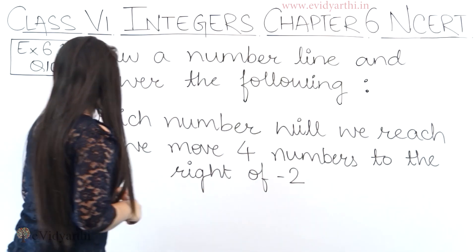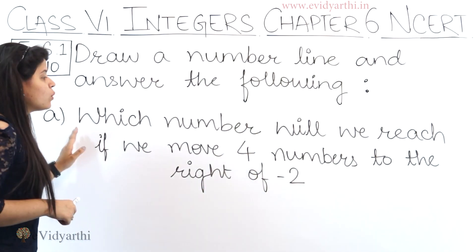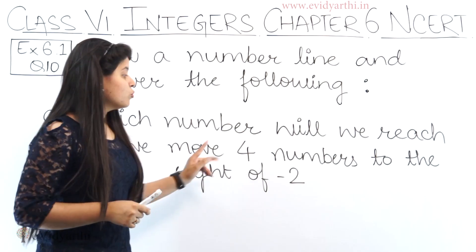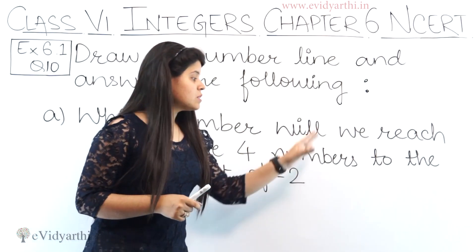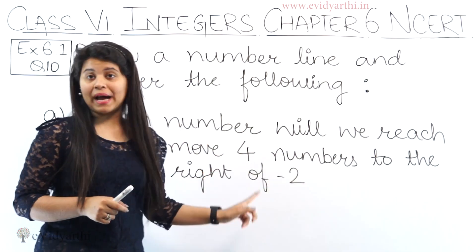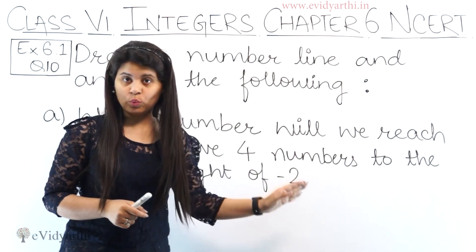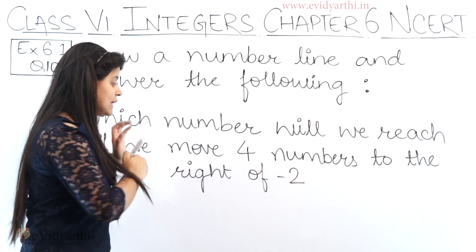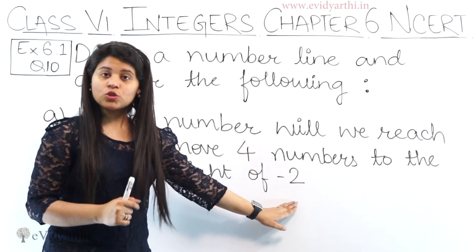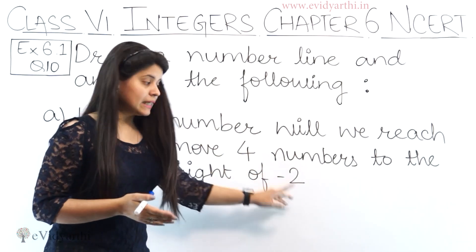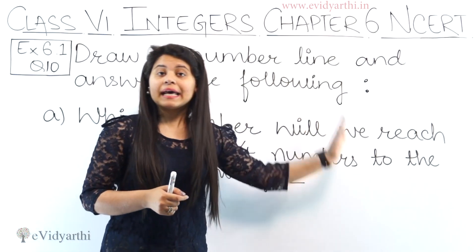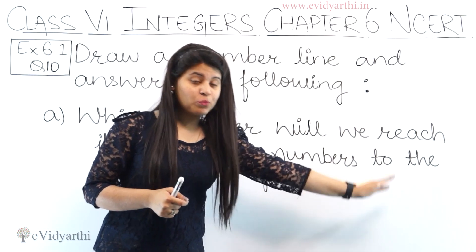The first part is: which number will we reach if we move 4 numbers to the right of minus 2? You have to draw a number line, mark minus 2, and then move 4 numbers to the right side.